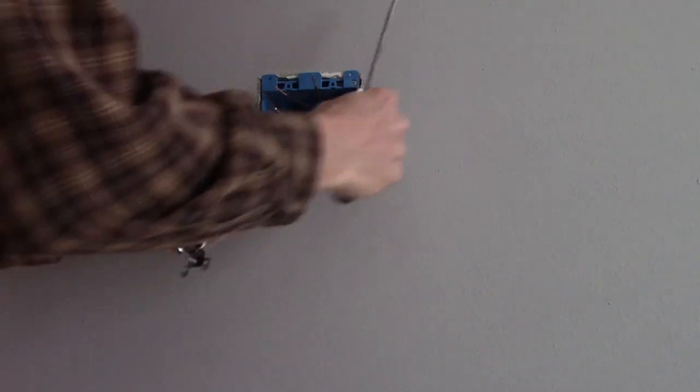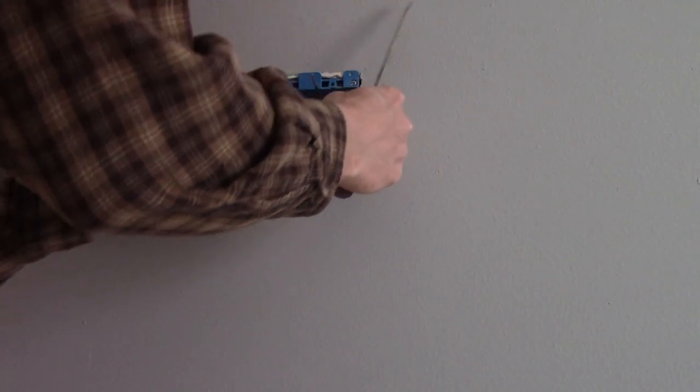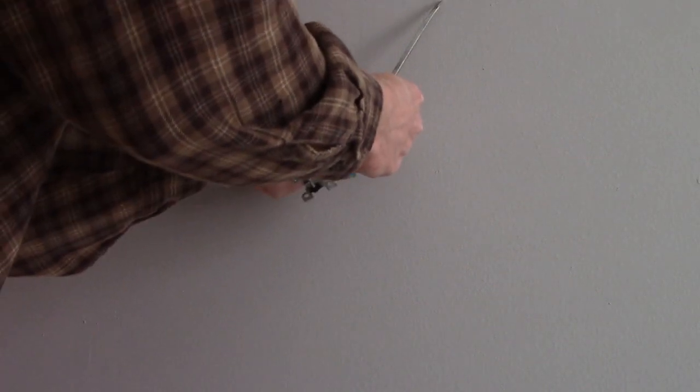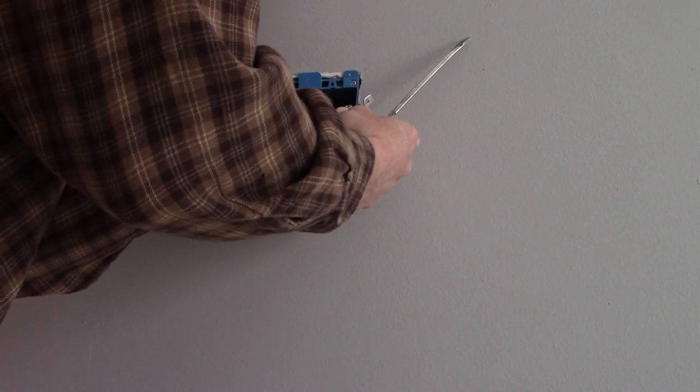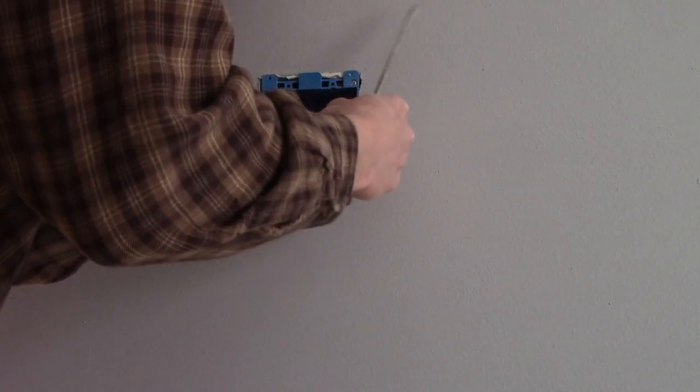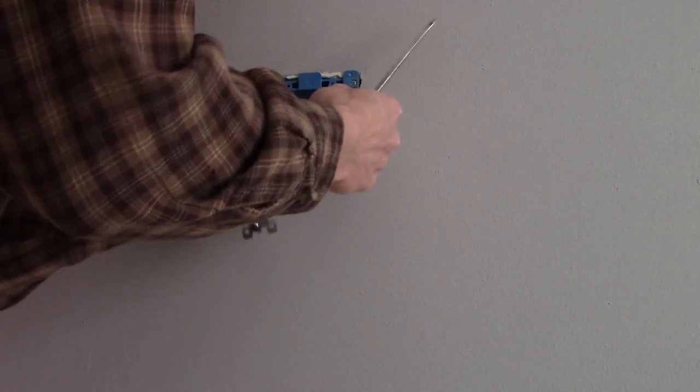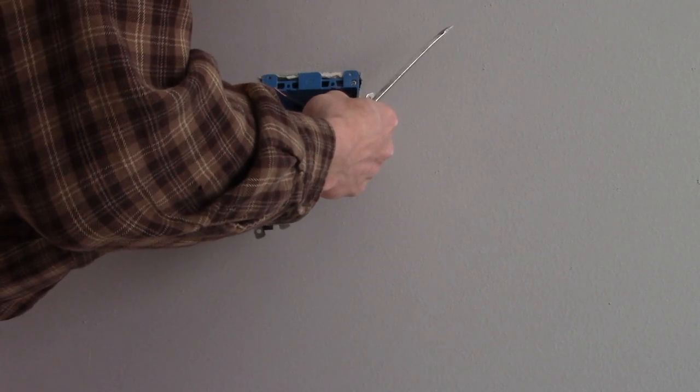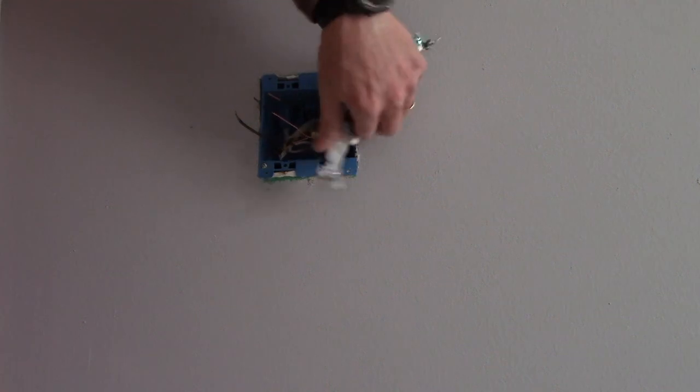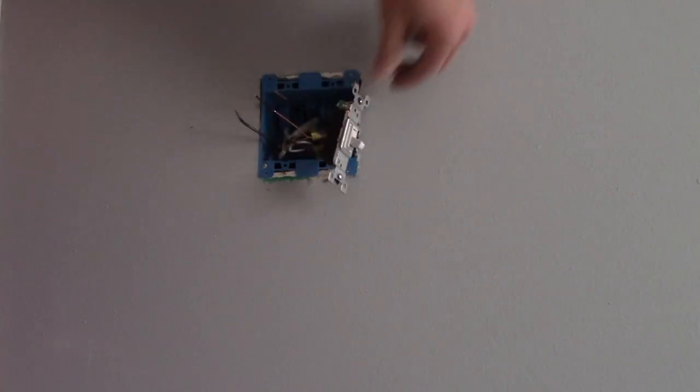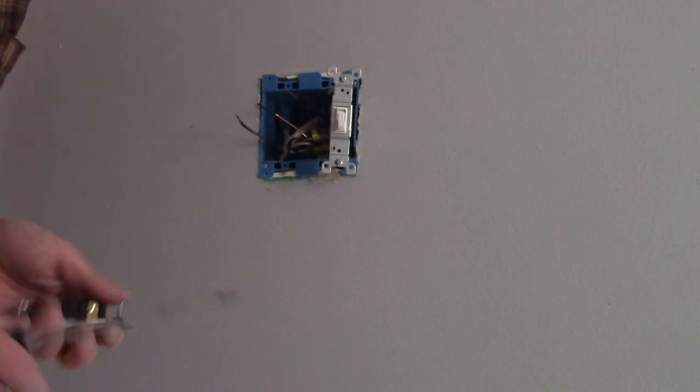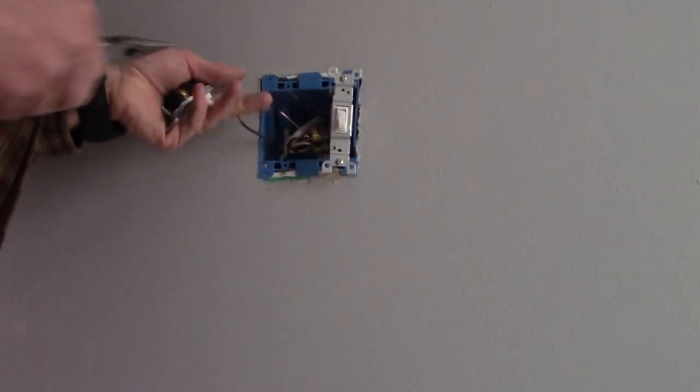Okay. We'll take our input wire here. Input's now going to be going in the top. It doesn't matter. They can go either way. Now here's our output wire. Push it into the bottom. As you can see, it's pushed into the back of the switch. And we'll get that out of the way. We'll do our next switch.